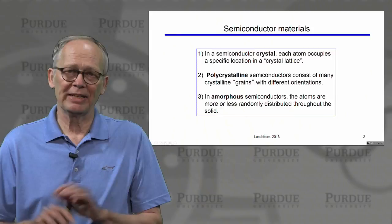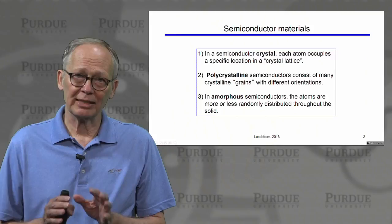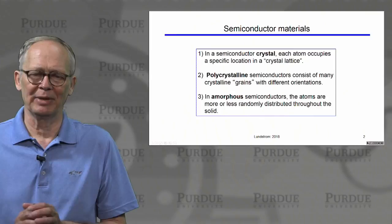Let's begin by defining what we're talking about. In a semiconductor crystal, each atom occupies a very specific location in what we call a crystal lattice. In a polycrystalline semiconductor, there are many different crystals — small crystal grains oriented differently with respect to each other. In an amorphous semiconductor, the atoms are distributed more or less randomly throughout the material.